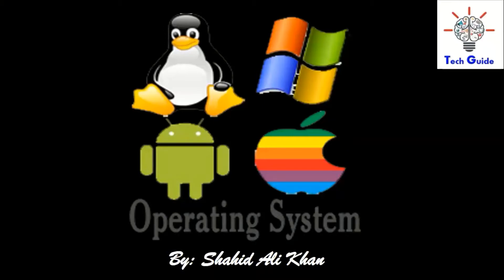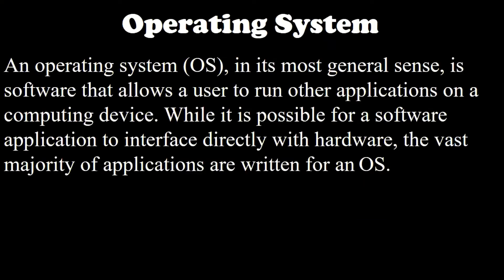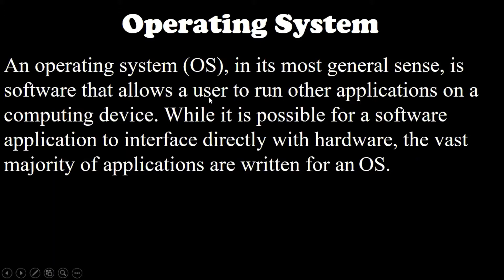First of all, an operating system in its most general sense is software that allows a user to run other applications on a computing device. While it is possible for a software application to interface directly with hardware, the vast majority of applications are written for a particular operating system. OS is short for operating system, and operating systems are used to make it possible for the user to communicate with the computer.